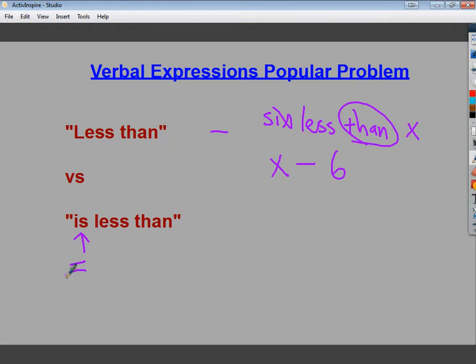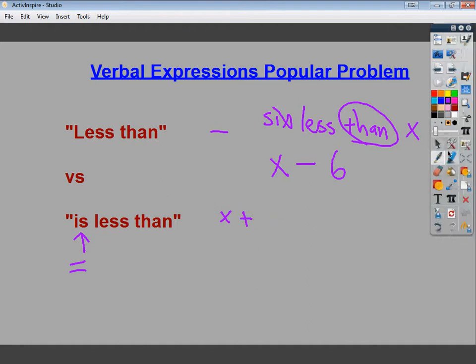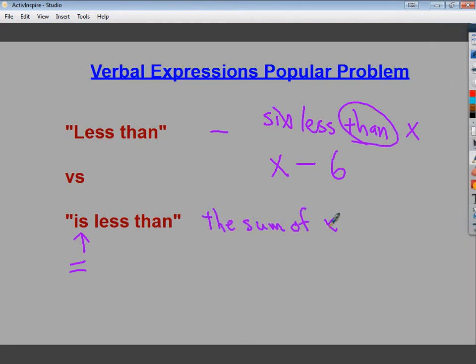If you see is in front of greater than or less than, it's sort of trying to tip you to the idea that it's talking about something that you can solve. So we're moving from an expression component to more of a solution, equation, and in this case, an inequality. So when I say the sum of x and 5, the sum of x and 5 is less than 14.